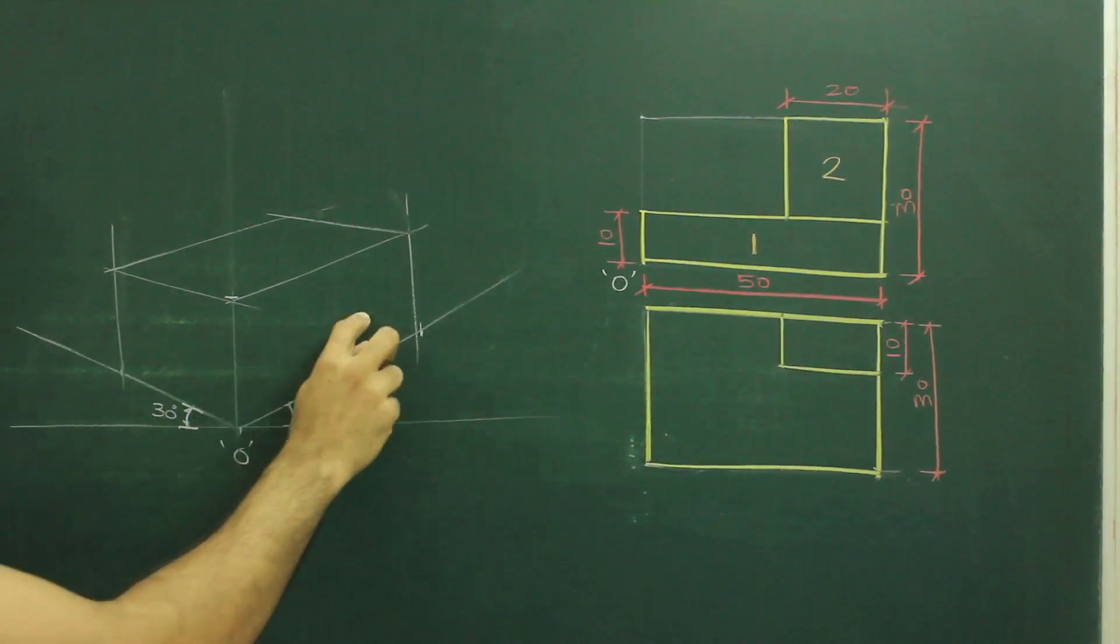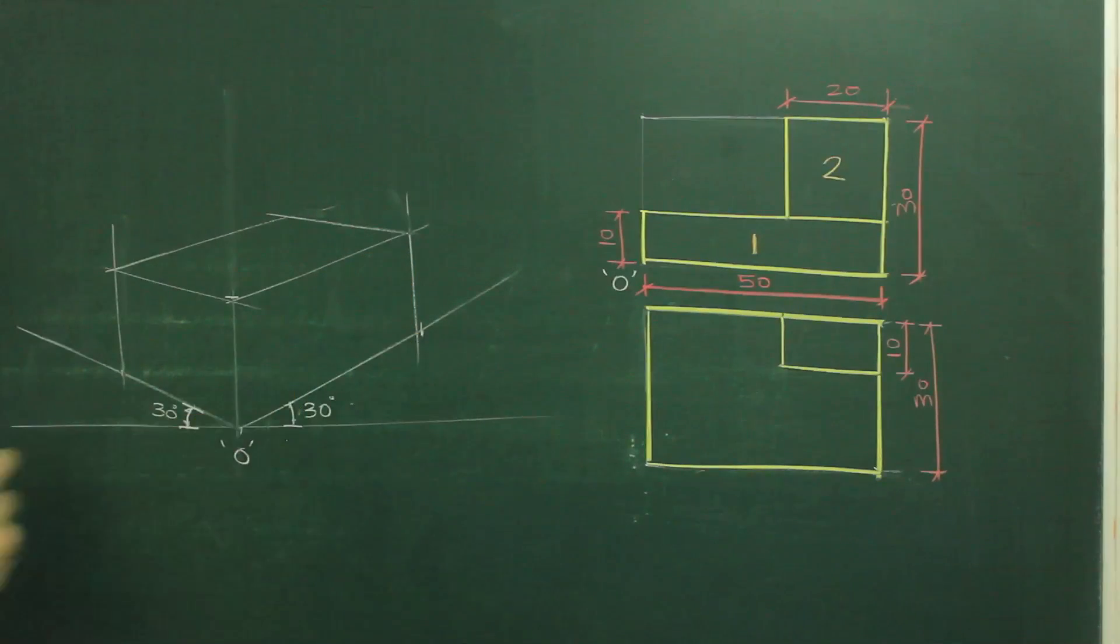That means if I can draw 1, I can't draw 2 over here. If I draw 2, I can't draw 1 over here. So we need to decide which one is nearer to me or which one is nearer to observer.